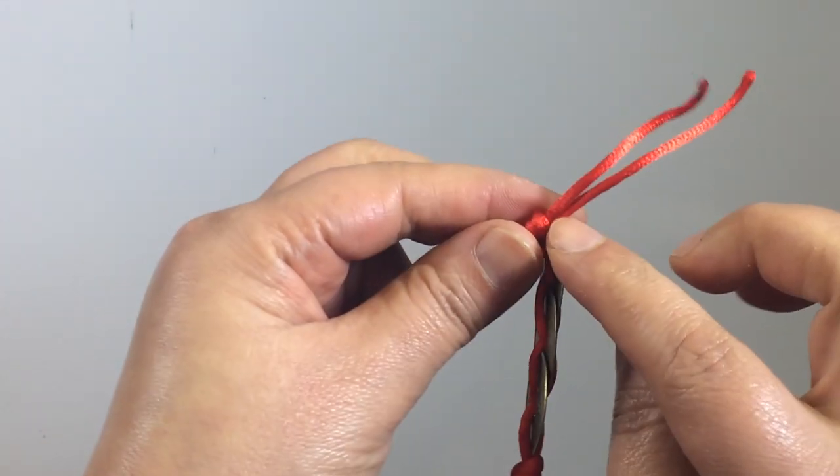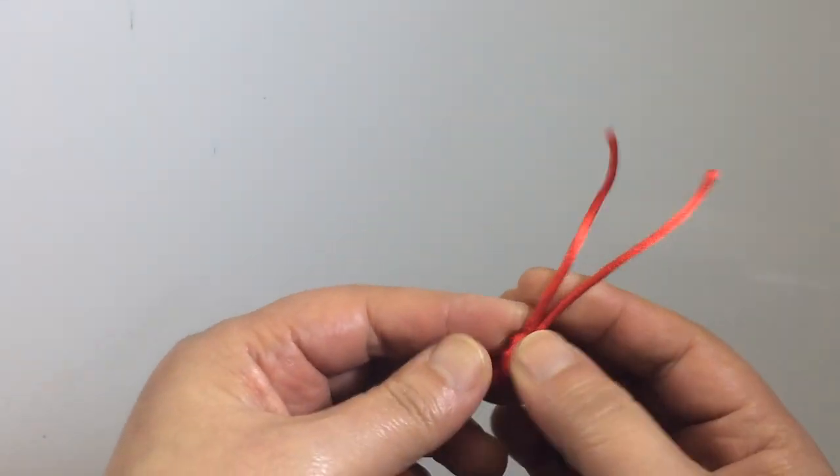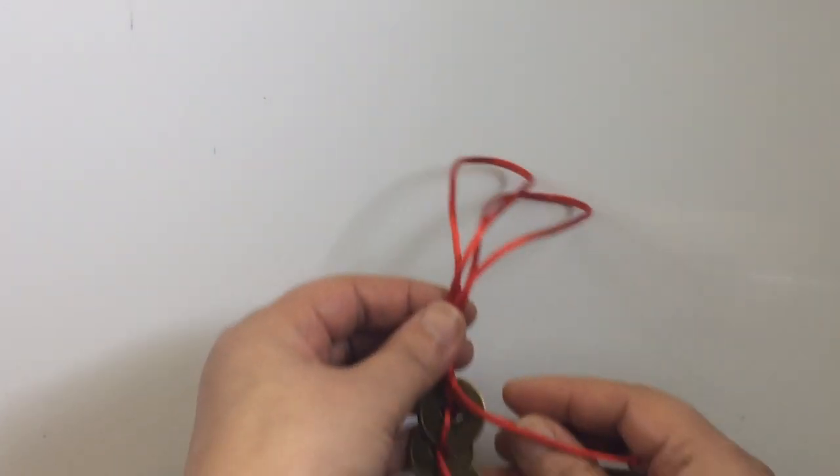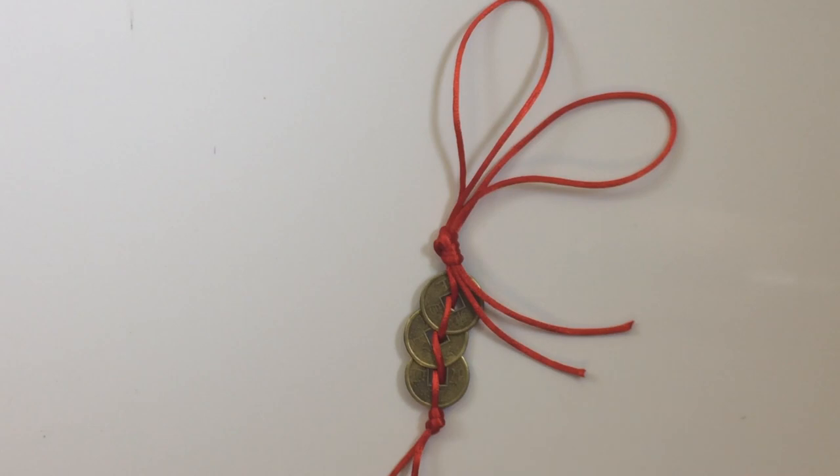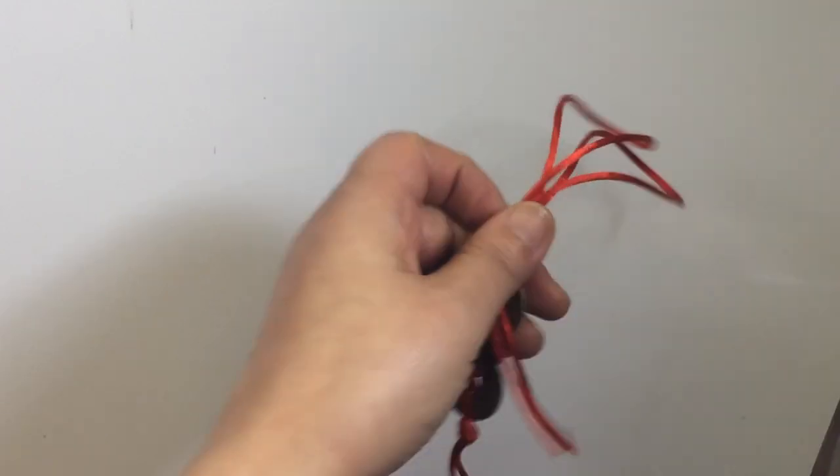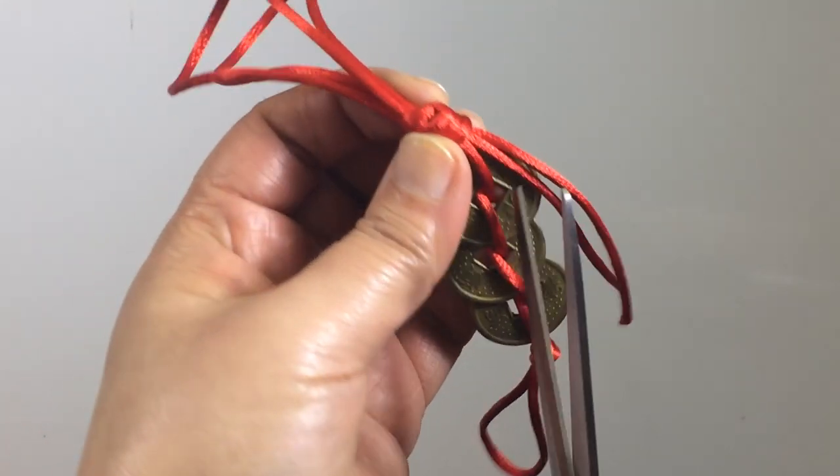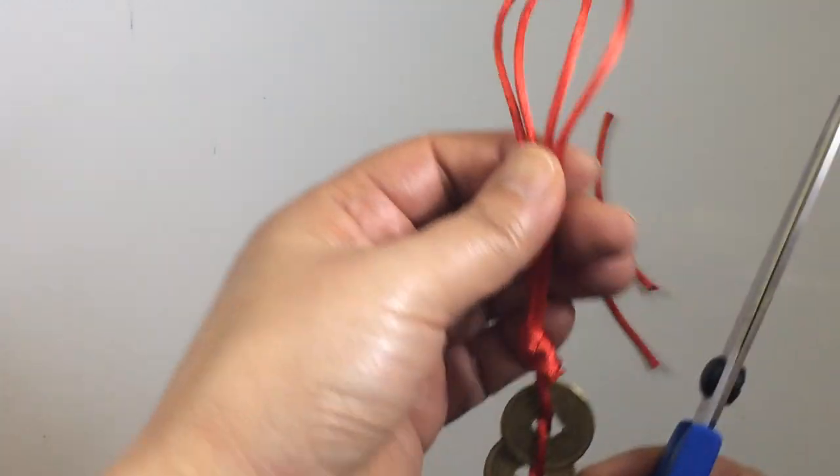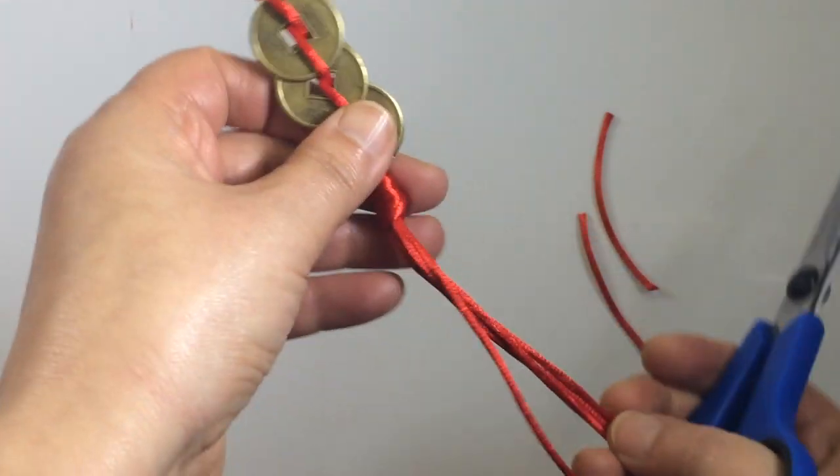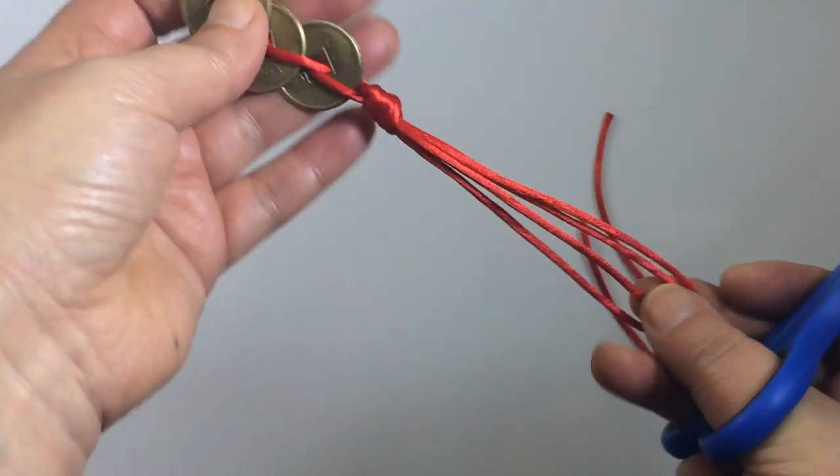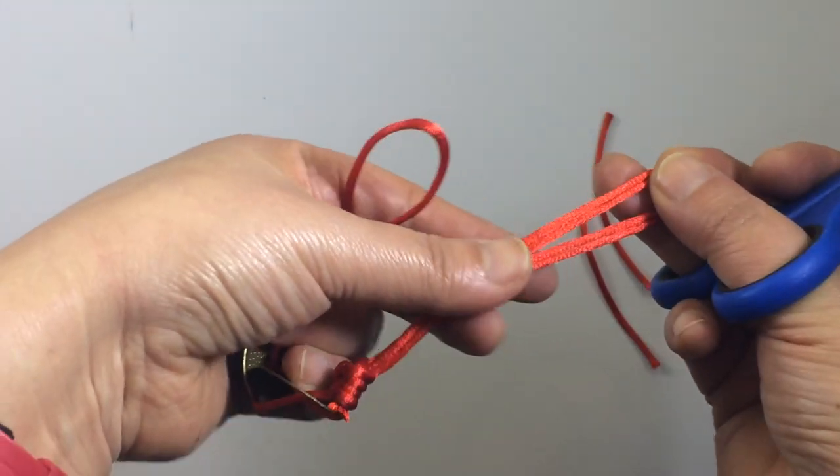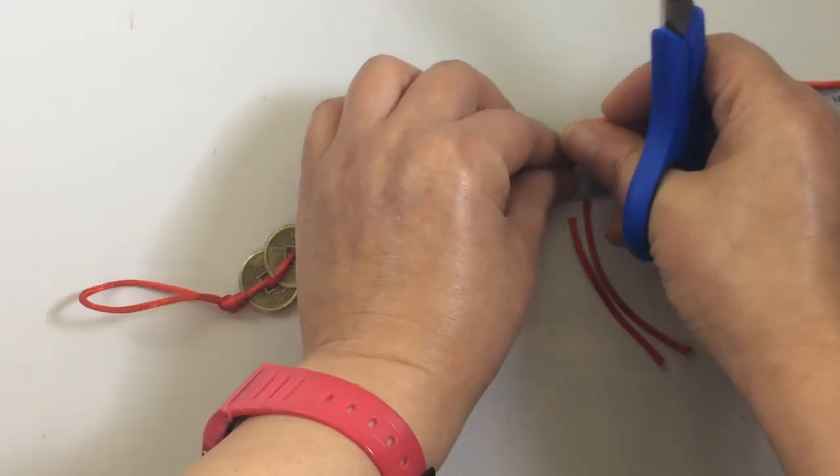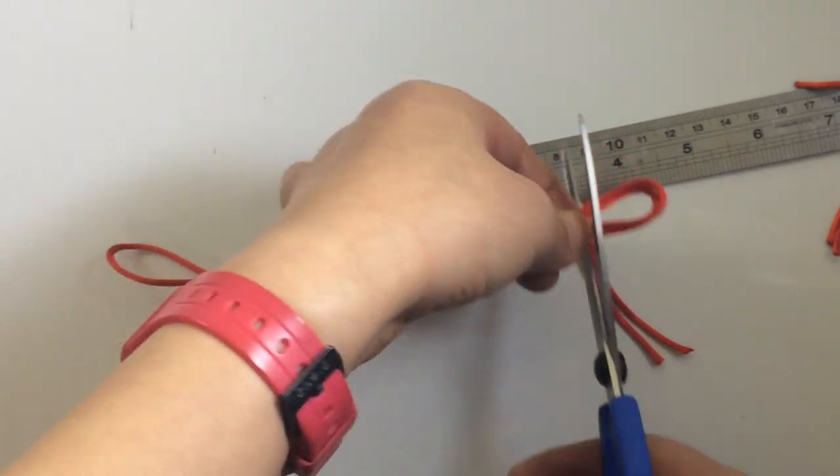Just cut this bit and cut this bit. You don't want it to be too long, so you just roughly make sure it's around about eight centimeters. Around eight centimeters, you just cut it. You can see this tassel. You can see this Chinese feng shui lucky coin type of charm is sorted.